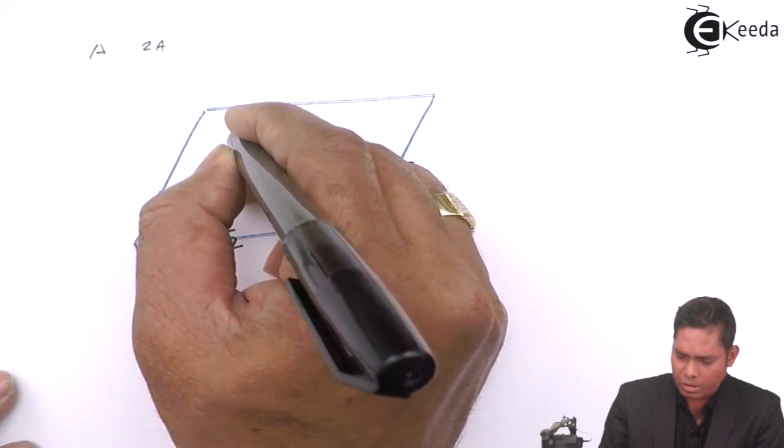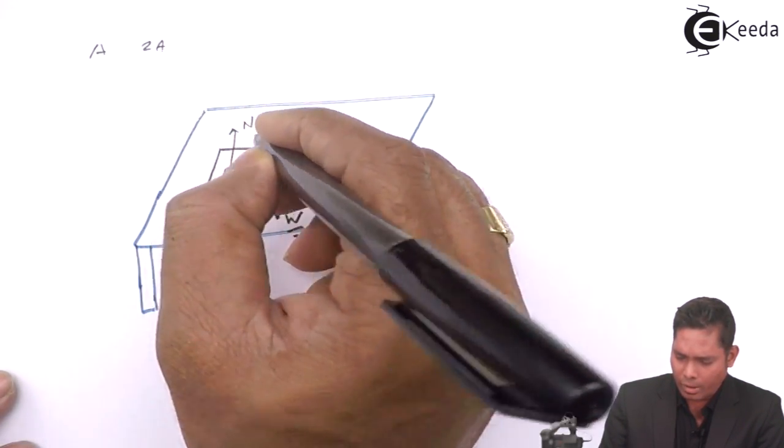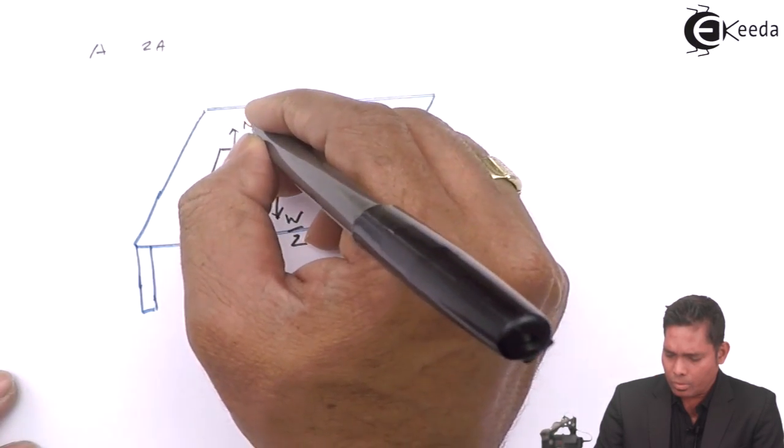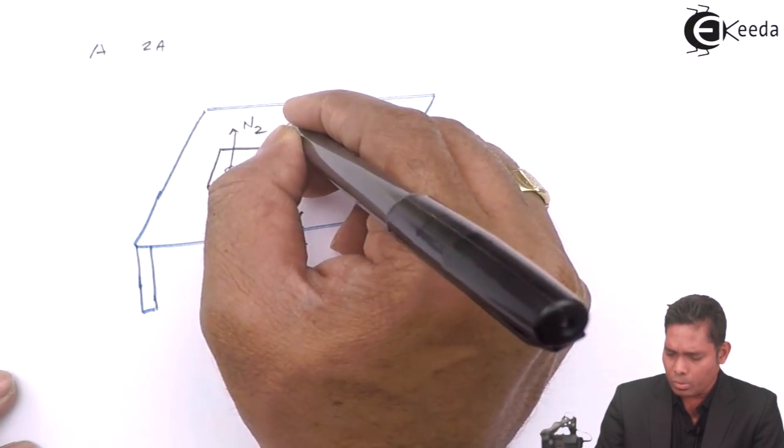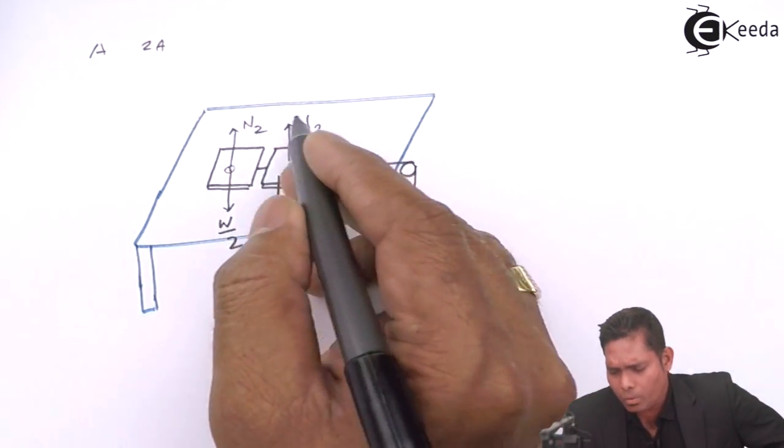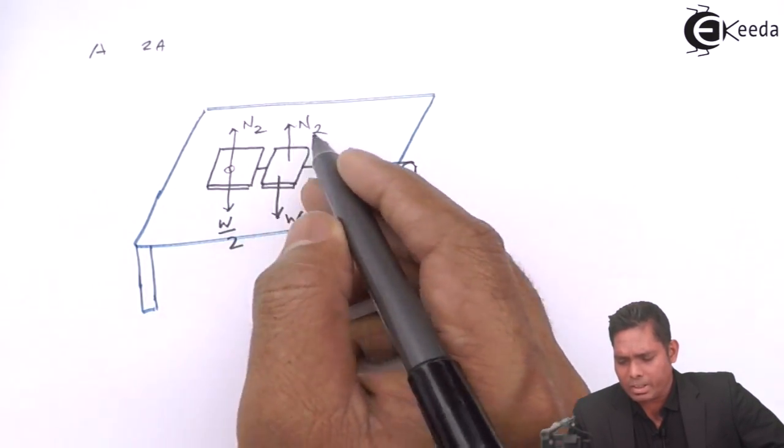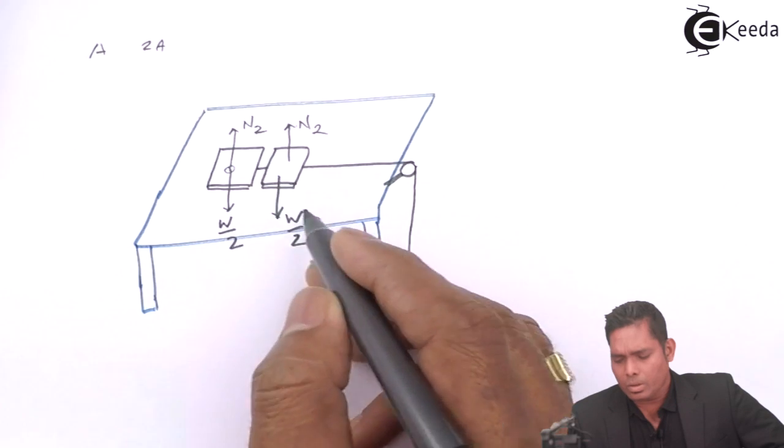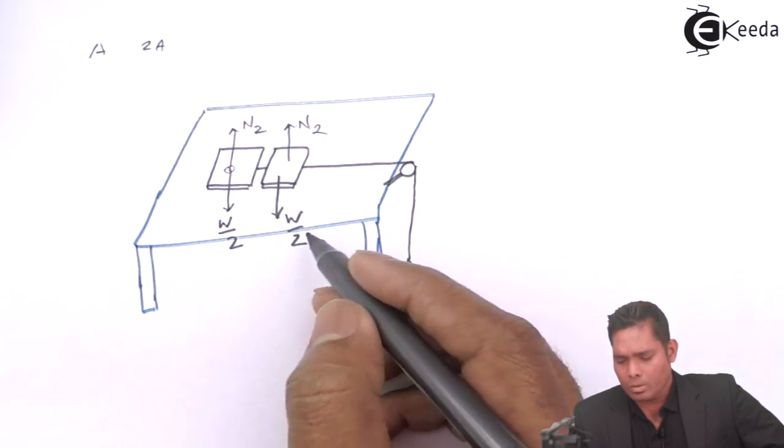But here, the normal reaction is supposed N2, where also the same N2. It is found that here it is 2N2, obviously. The total normal reaction is 2N2, and the total weight is W.